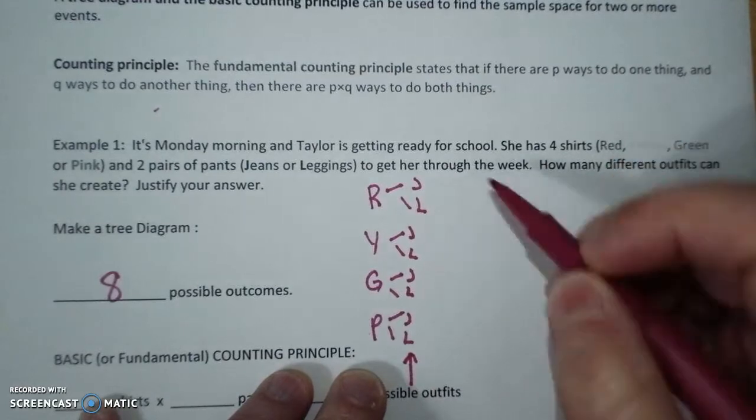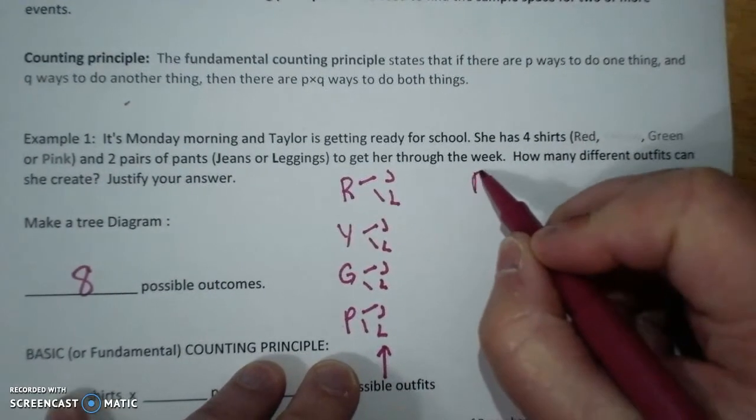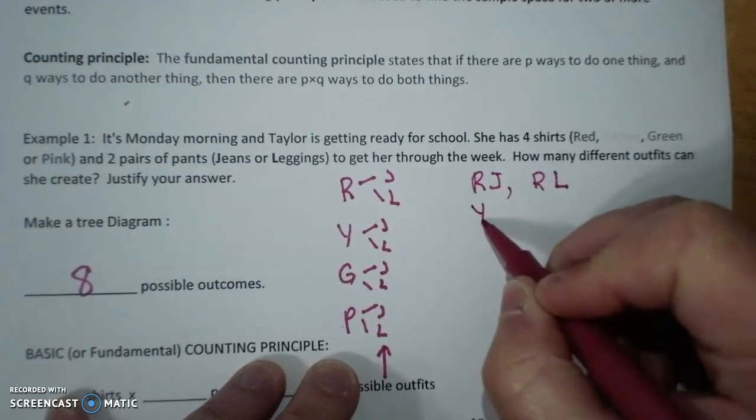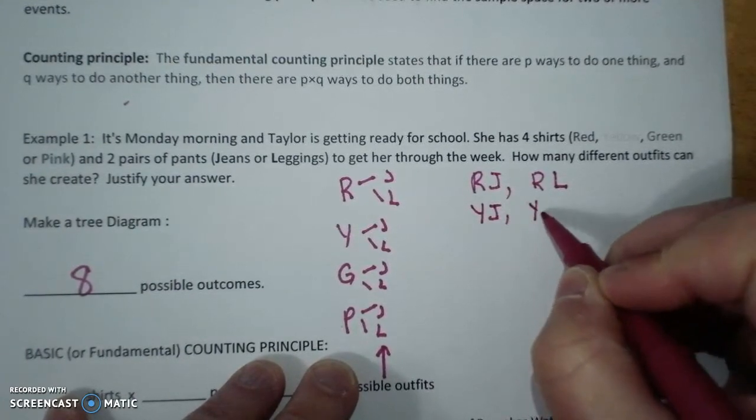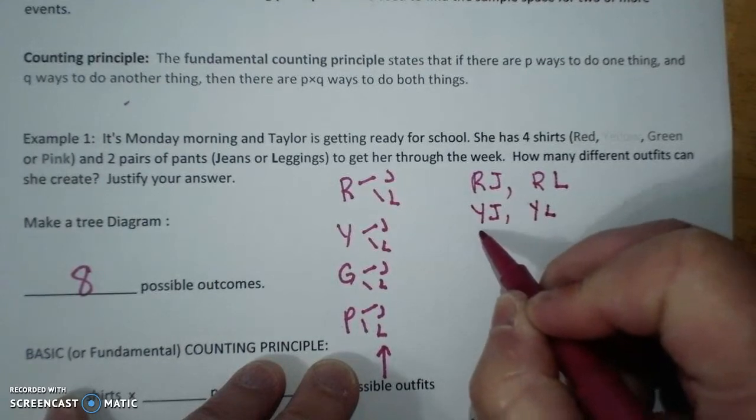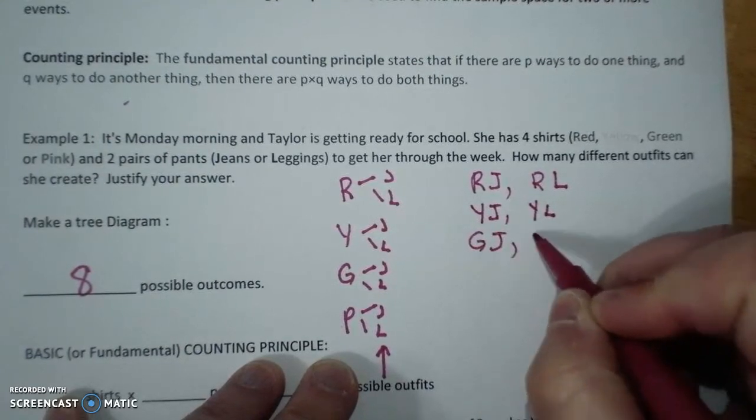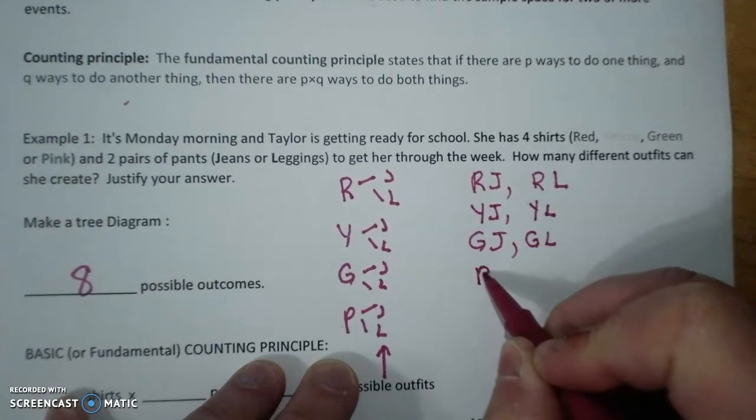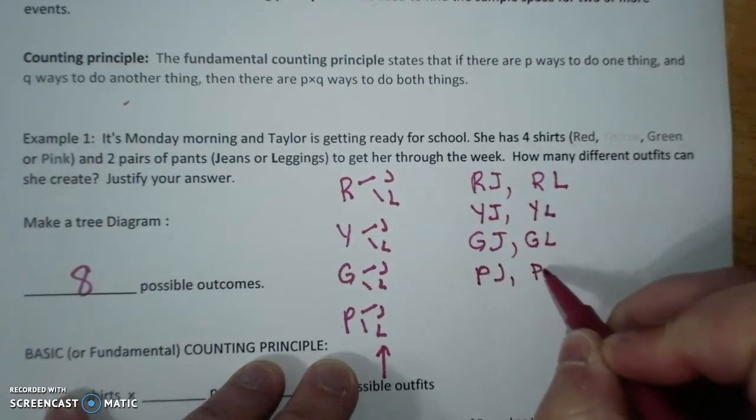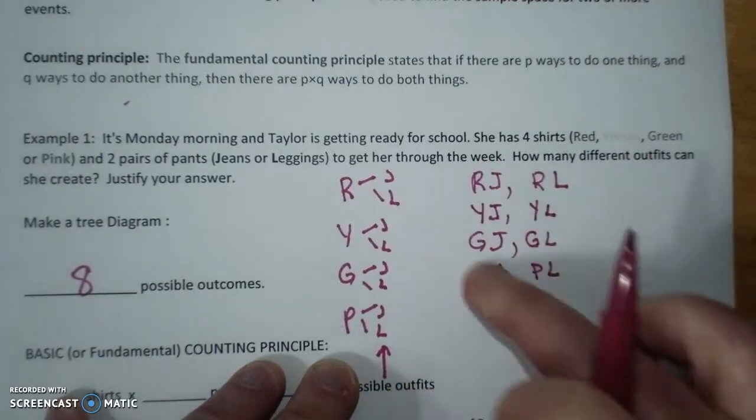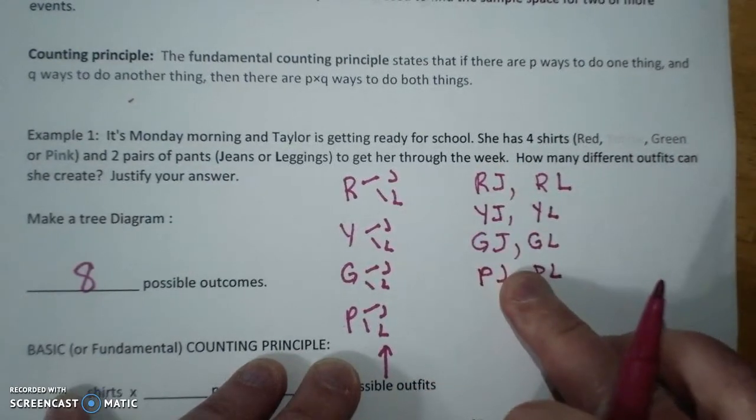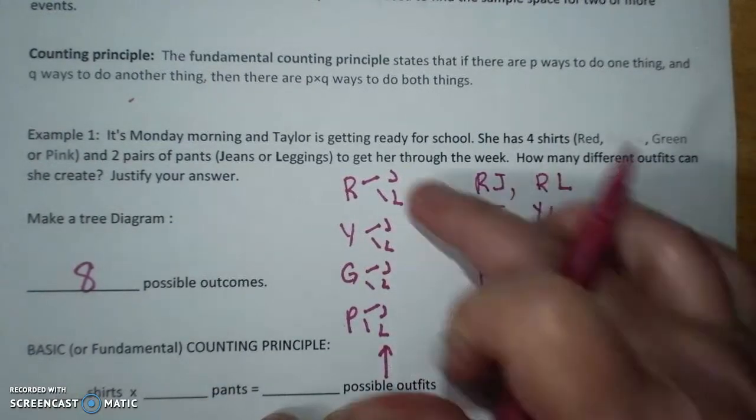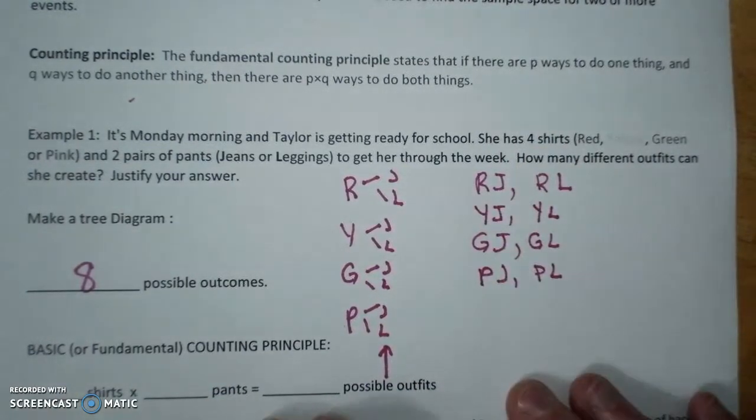And this is called a tree diagram because I can have red with jeans or red with leggings. I can have yellow with jeans or yellow with leggings. Green with jeans, green with leggings. Pink with jeans, pink with leggings. This is called a sample space. It's listing all of my outcomes. And so this is a tree diagram. This is your sample space.